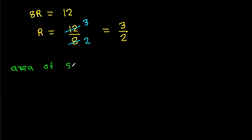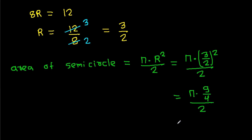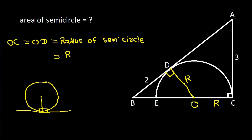The area of the semicircle is π × R² / 2 = π × (3/2)² / 2 = π × (9/4) / 2 = 9π/8. So the area of the semicircle is 9π/8.